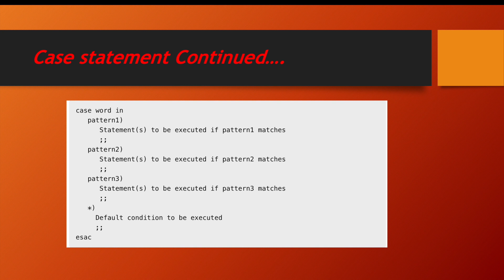The syntax for case statement is: 'case' followed by the word, then the 'in' keyword, then your pattern, statement, and double semicolon. You repeat this for each pattern. The last section uses a star as the default case. To close the case statement, you use 'esac' — which is just 'case' spelled backwards — similar to how we used 'fi' to close an if statement.